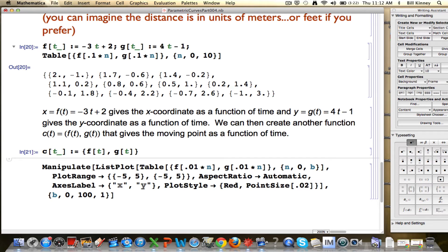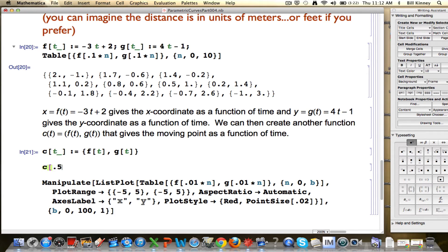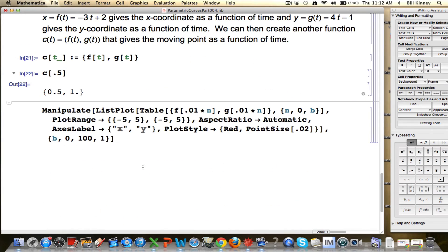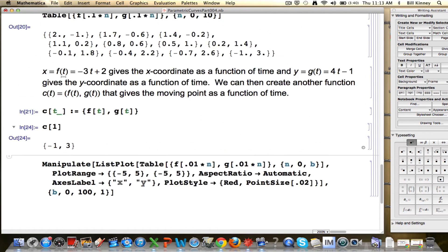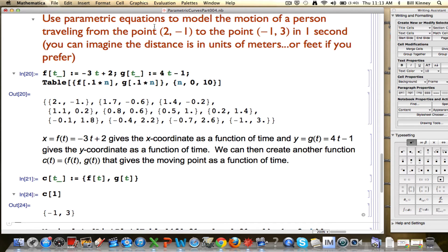And watch, I can even evaluate this at different points. For example, I can plug in 0.5. I haven't shown this to you before, but I could plug in 0.5 here to evaluate this at t = 0.5. What I should get is this particular list right up here. The output of the function should be the point whose coordinates are 0.5, 1. And I do. I can also find the starting point, c[0] is the starting point, (2, -1). The ending point, c[1] is the ending point, (-1, 3). Look back up here. Time from (2, -1) to (-1, 3) in one second. Time equals 0 is where you start. Time equals 1 is where you end.